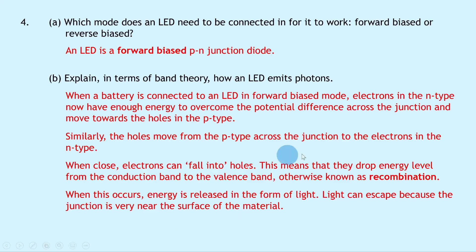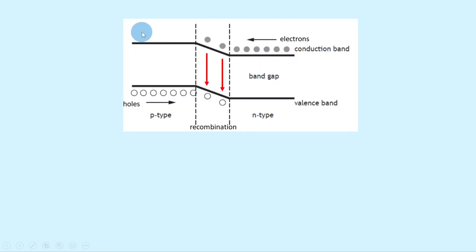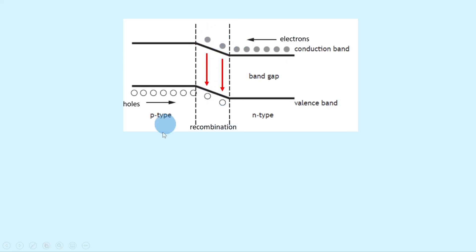If you were to sketch this situation for an LED, it would look like this. We have our conduction band at the top, our valence band at the lower energy level, and the electrons in the conduction band of the N-type material move towards the junction and therefore towards the P-type. The holes in the valence band of the P-type material move towards the N-type. When the electrons in the conduction band fall into the holes in the valence band at the junction, recombination takes place and this loss of energy from the electrons dropping down an energy level is emitted as light in the form of photons — particles of light.